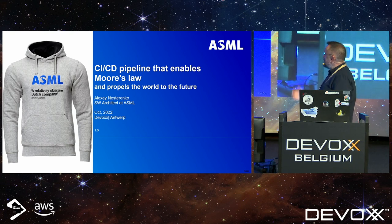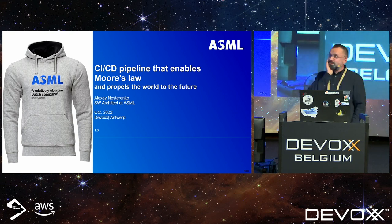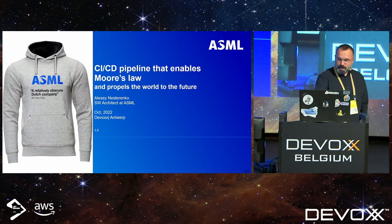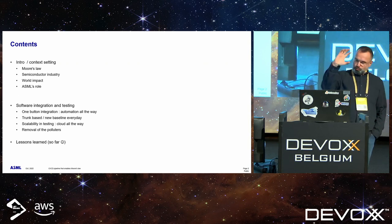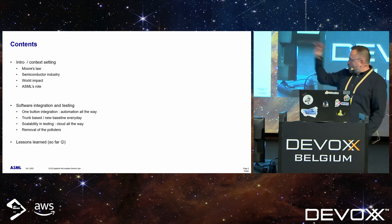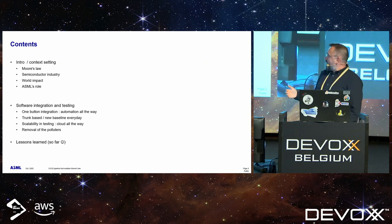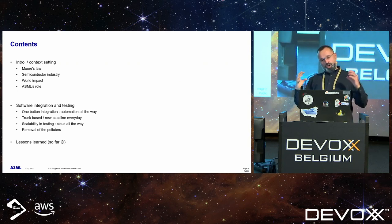So, the CICD pipeline which enables Moore's law and propels the world to the future — and this is absolutely true. There will be two blocks: first, what is the semiconductor industry and what does ASML do there? And then software integration and testing at ASML. It will be like good architecture — high cohesion, low coupling.